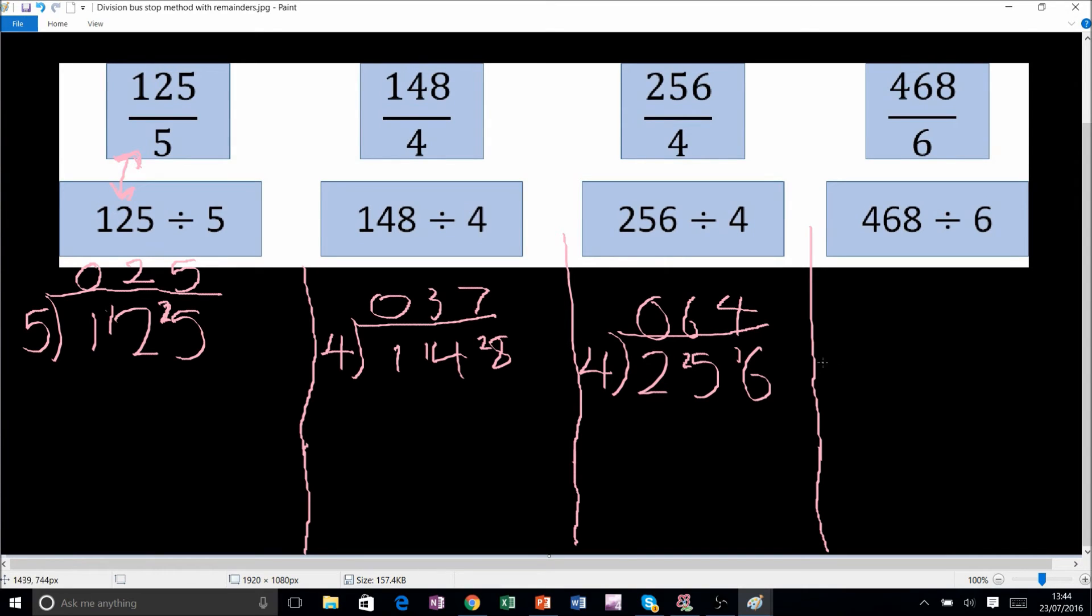For the last question, let's do that one. We've got 6, we've got 468. How many sixes go into four? Zero, remainder four still. So put the four beside the 6, so that now becomes 46. How many sixes go into 46? That's 6, 12, 18, 24, 30, 36, 42. That is seven, and remainder four.